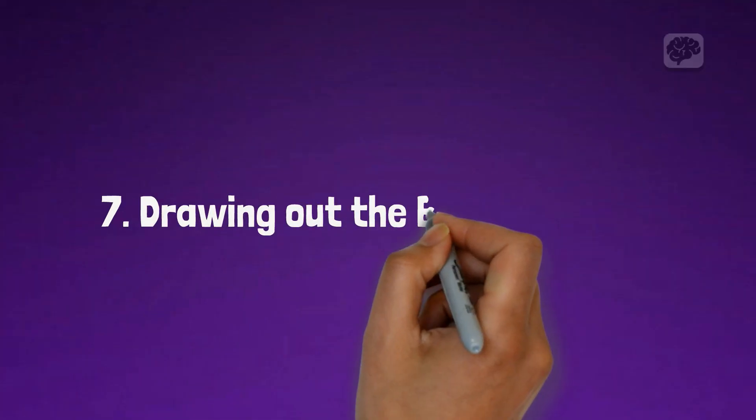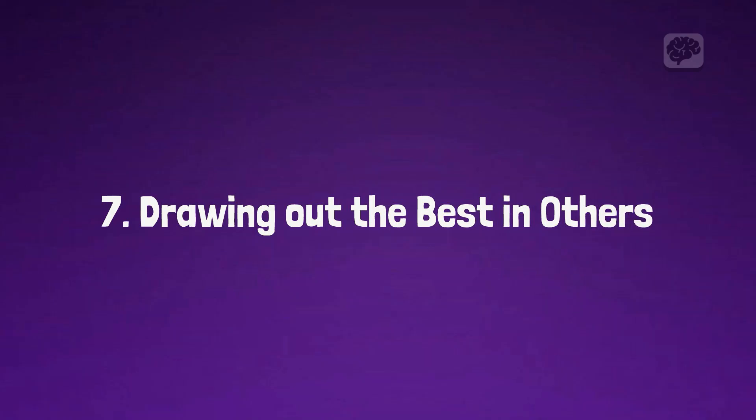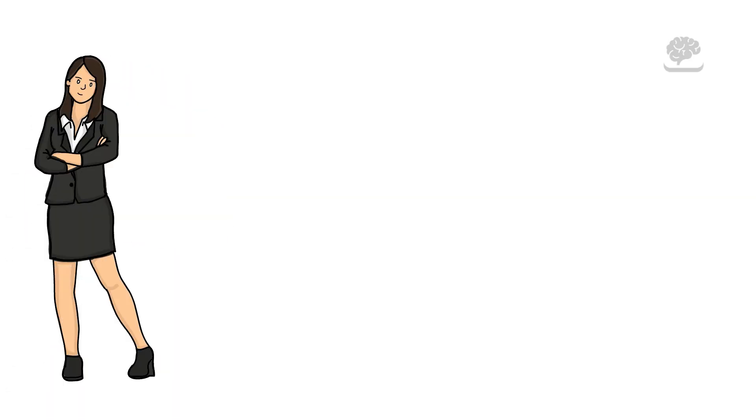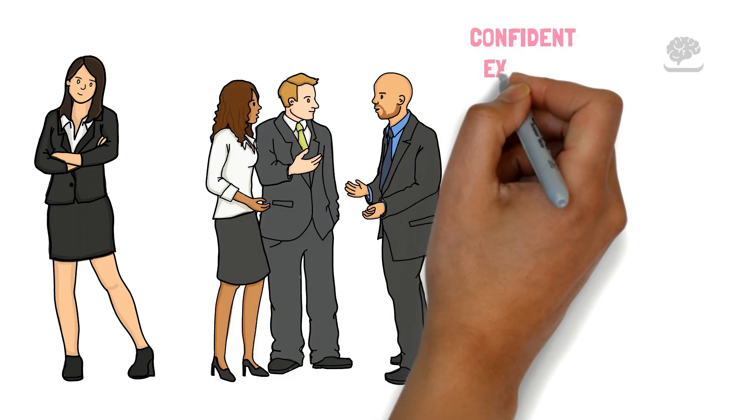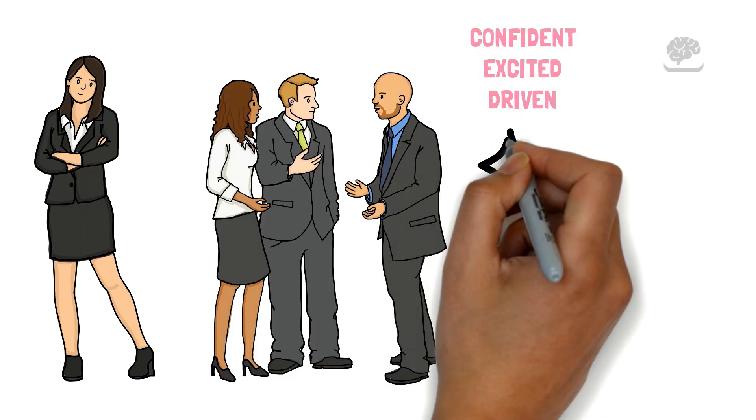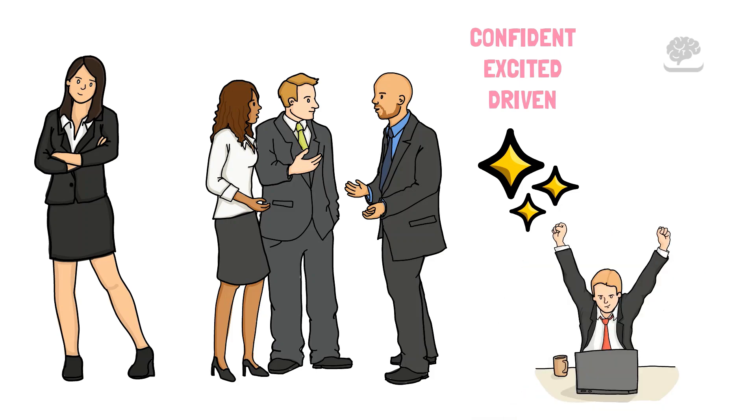Number 7: Drawing out the best in others. Attractive people have a special talent to encourage others to reach their best. When you're around, people feel more confident, excited, and driven. Your positive energy helps them grow and get better.